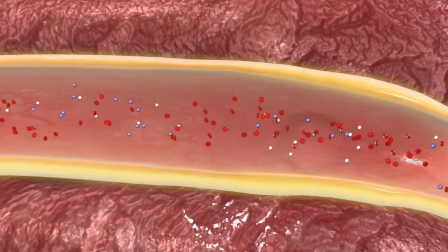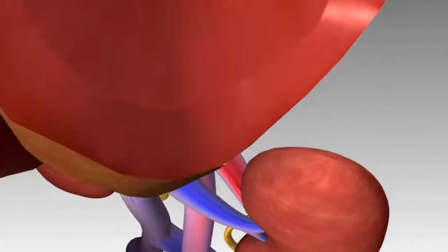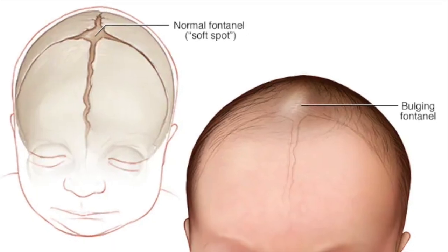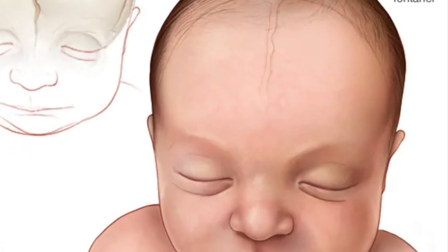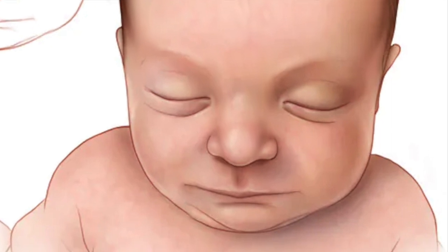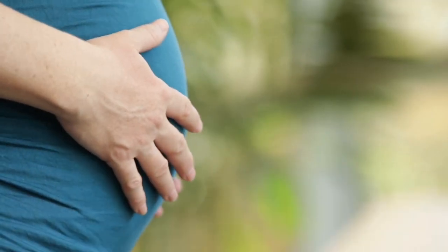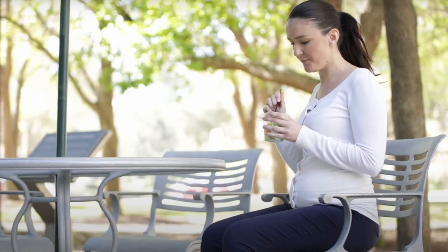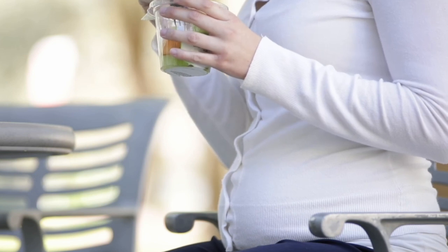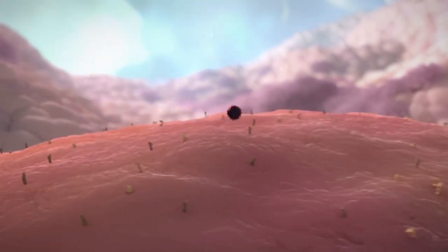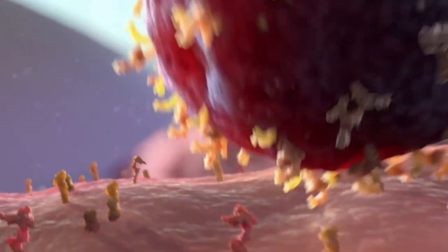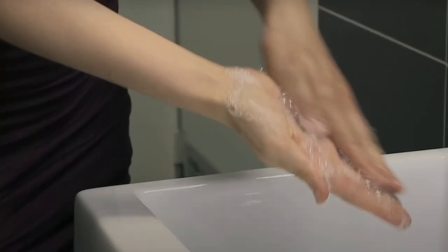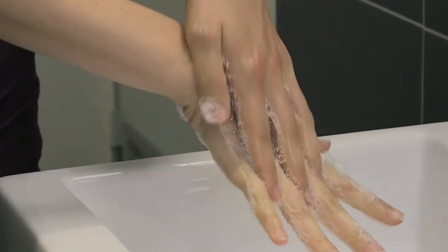Mumps is not only highly contagious, but it can also lead to serious long-term health problems, making prevention crucial. Complications can arise that affect other parts of the body such as the pancreas, the kidneys, and the heart. In rare cases, mumps can cause encephalitis, an inflammation of the brain that can result in seizures, deafness, or even death. Mumps can be especially dangerous for pregnant women, as it can increase the risk of miscarriage or premature birth. It can also cause fetal malformation, and in rare cases, stillbirth. What makes mumps particularly concerning is its ability to survive outside the body for a short time, meaning it can persist on surfaces and potentially infect others. This is why it is so important to practice good hygiene habits such as washing your hands frequently and avoiding close contact with people who are sick.